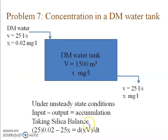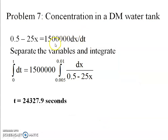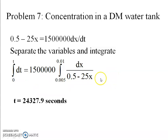Since inlet and outlet flow rates are the same, volume V within the tank remains constant, so we pull it out of the differential to get V·(dx/dt). Converting from cubic meters to liters and plugging everything in gives a differential equation. Solving by separating variables and integrating between limits — at t = 0 the concentration is 0.005 mg/L, and at time t the concentration is 0.01 mg/L — applying the limits gives t = 24,327 seconds for the concentration in the tank to reach 0.01 mg/L.